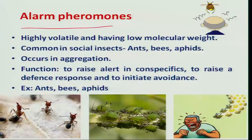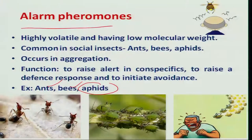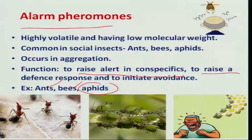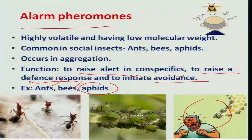What are alarm pheromones? As the name indicates, alarm pheromones are going to create some defensive mechanism and also some avoidance mechanism. This mechanism was much studied in case of some social insects like ants and bees and also in some aphid species. The function of alarm pheromones is to raise an alert in the same species, thereby raising some defense and avoidance mechanism. For example, when a bee attacks some individual, it releases alarm pheromones, thereby other honey bees are going to follow the victim for further attack.